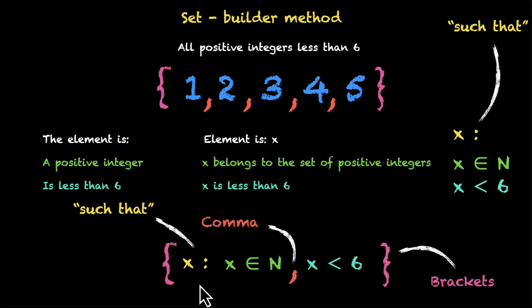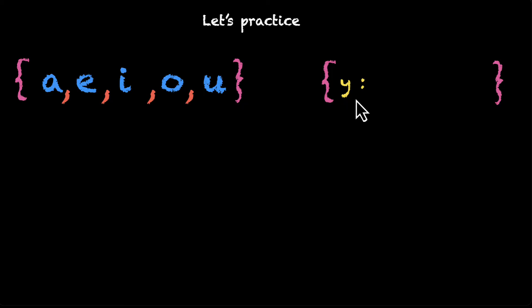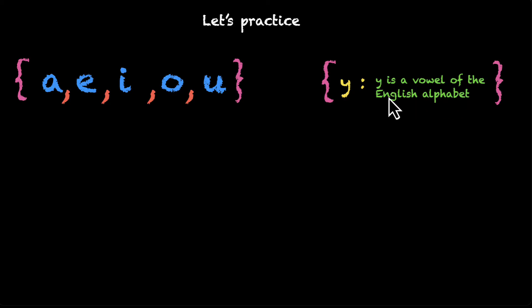Let's do a few examples. A, E, I, O, U — that's your answer. What's the question? Well, the question is you are looking for all y's — you can use any variable — such that y is a vowel of the English alphabet.